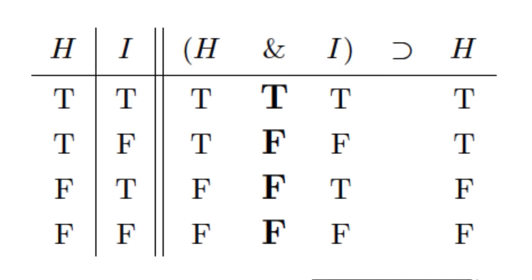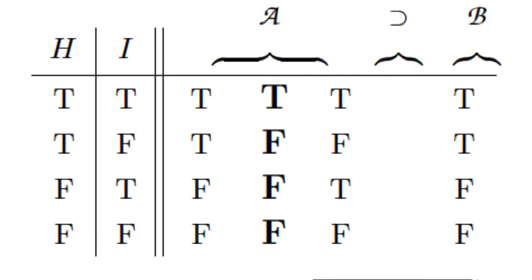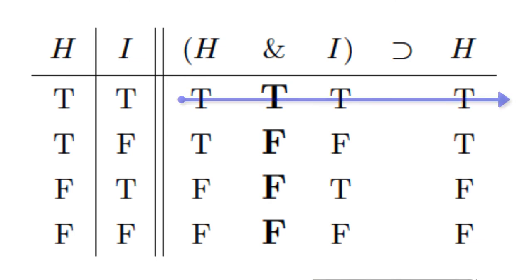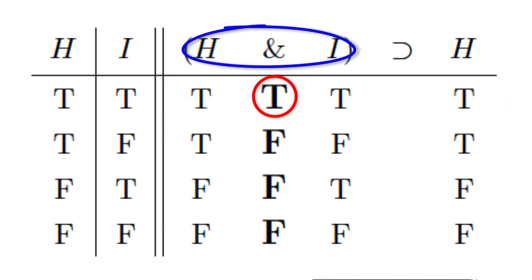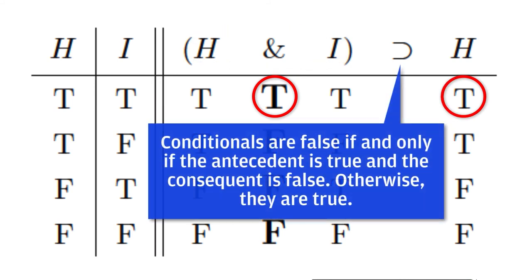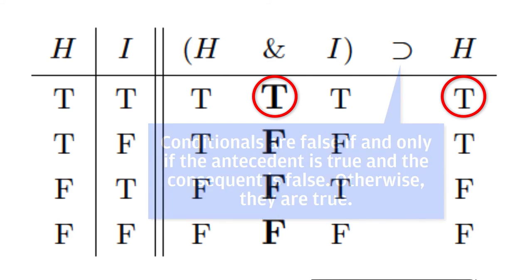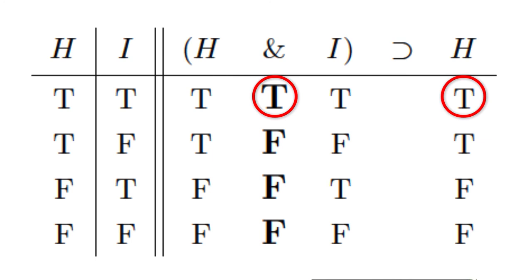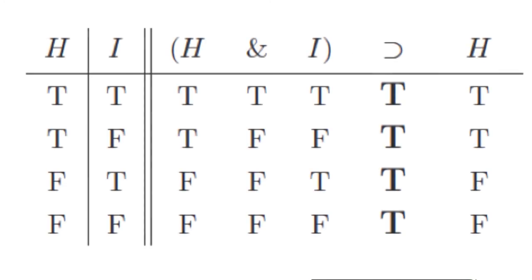Next we need to fill in the final column under the conditional. The conditional is the main connective of the sentence, so the whole sentence has the form, if A, then B. To fill the final column, we just need to look at the characteristic truth table for the conditional. For the first row, the sentence H ampersand I is true and the sentence H is also true. The rule for the conditional asserts that conditionals are false if and only if the antecedent is true and the consequent is false. That is not the case here. Filling in the rest of the column gives us the complete table.